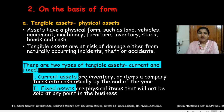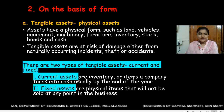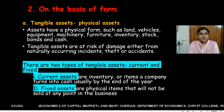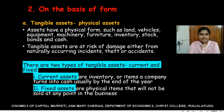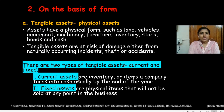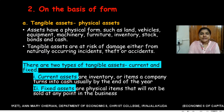These assets have a physical form — we can see and touch them — that's why they are known as tangible or physical assets. Tangible assets are at risk of damage either from naturally occurring incidents, theft, or accidents. Because they have a physical form, they are vulnerable to such risks.